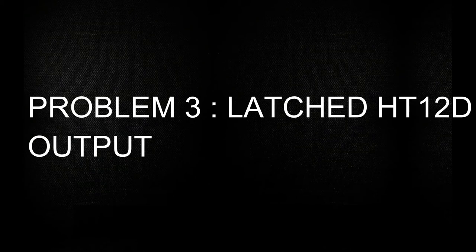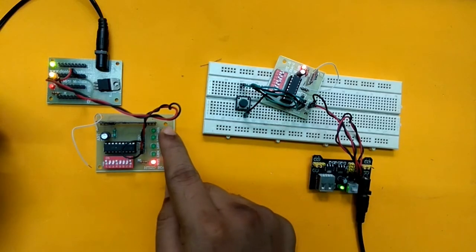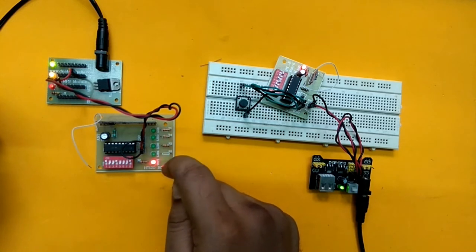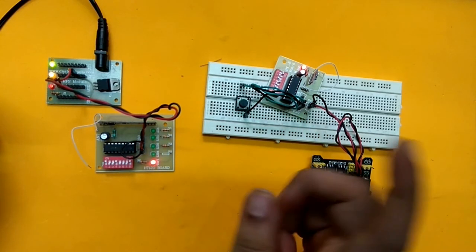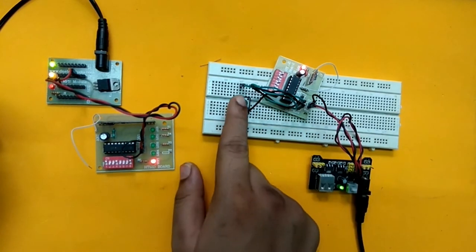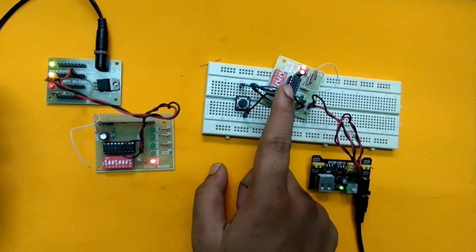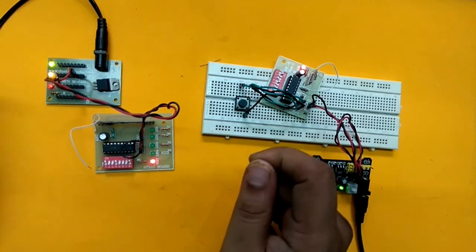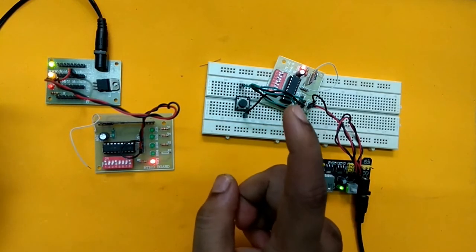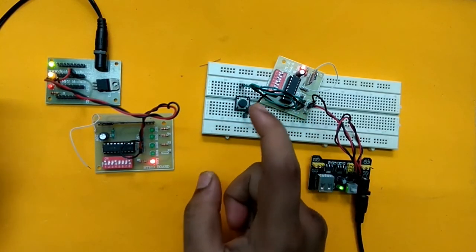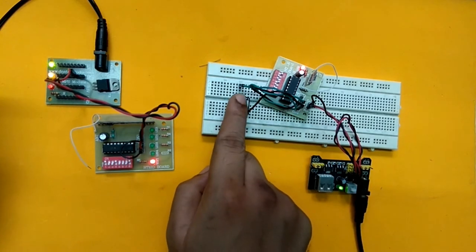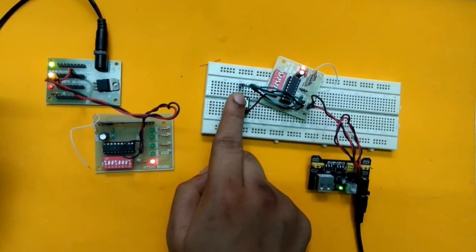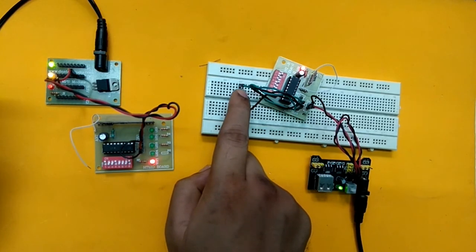Problem 3: Latched HD12D output. The output of HD12D is latched and not momentary. You may not face much problem when using buttons to feed input, but when using another signal source, output data might get latched or remain stable unless another pulse is fed in the input. This will have some consequences if you want to embed this board to a microcontroller or some other logic controllers.